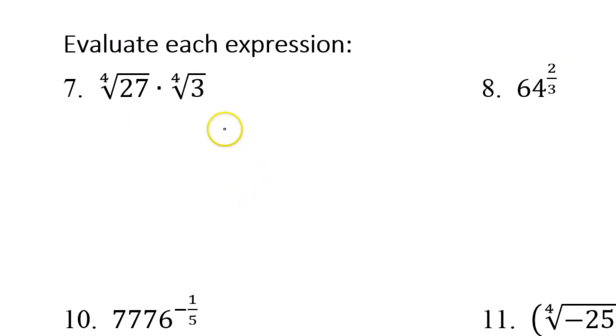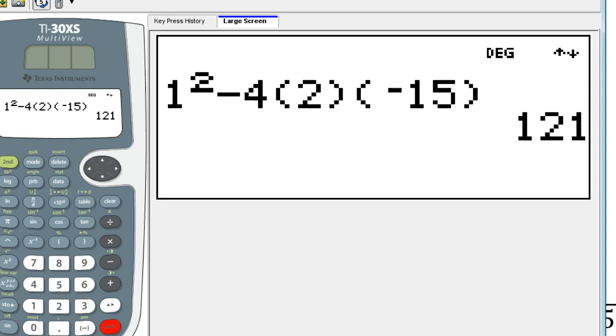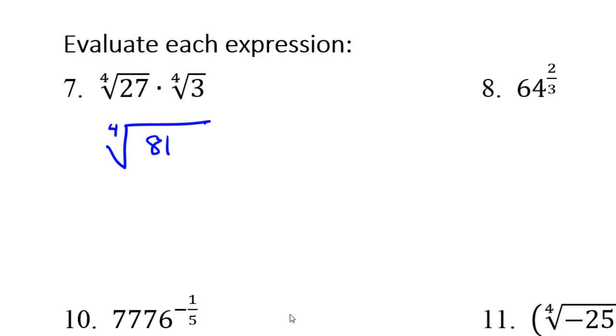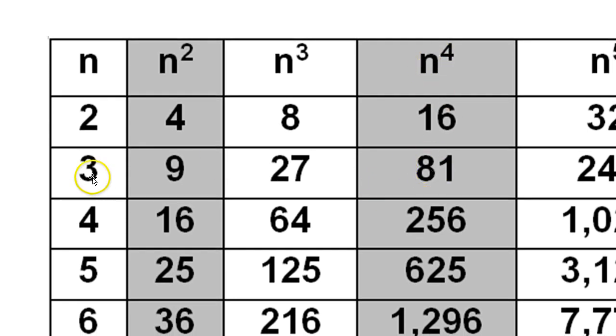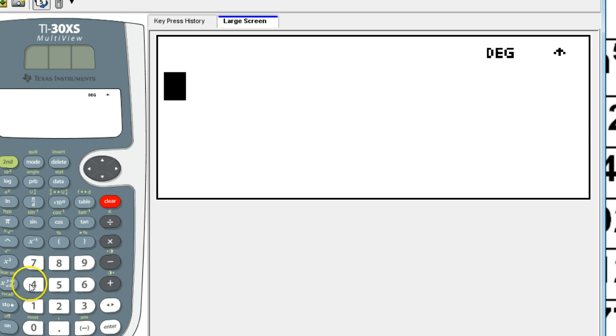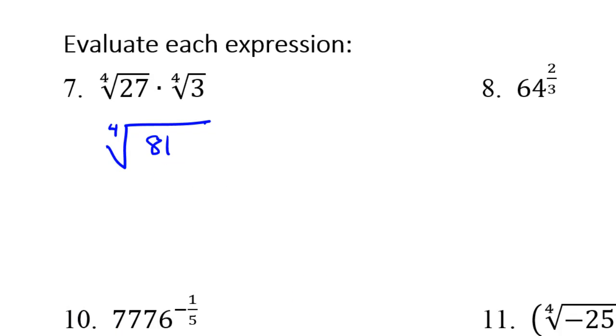Number 7. Notice that the roots are the same, 4th root, 4th root. If the roots are the same, you can go ahead and do the multiplication. So this is going to give you the 4th root of, what's 27 times 3? 81. So, that's 4th root of 81. If you have a calculator, remember how to do the 4th root? If you type the number 4 first, and then if you hit 2nd, carat, it turns into a 4th root. So, 4th root of 81 is 3.